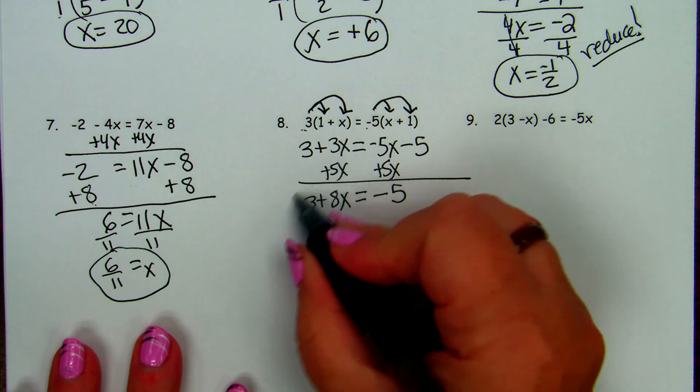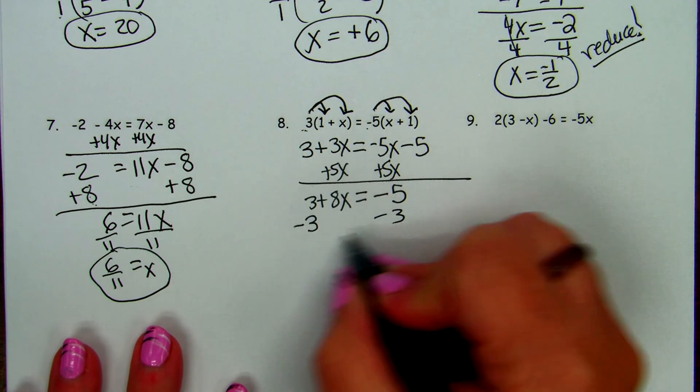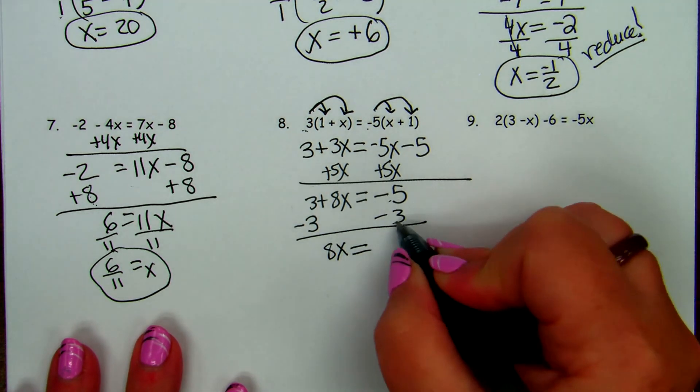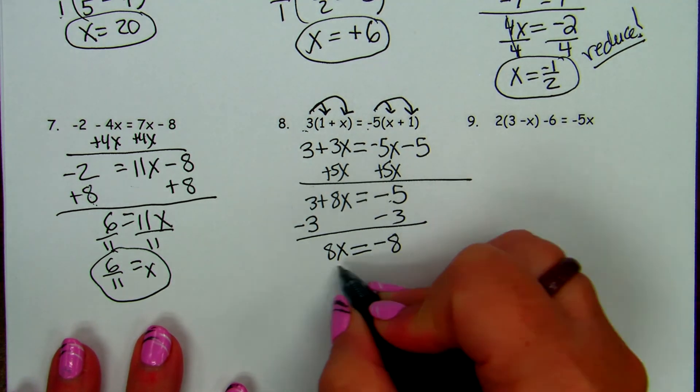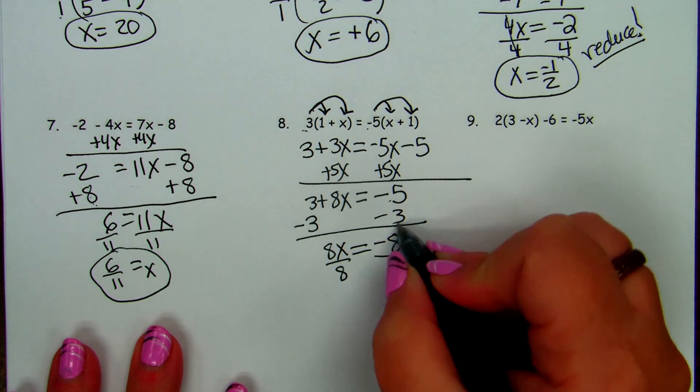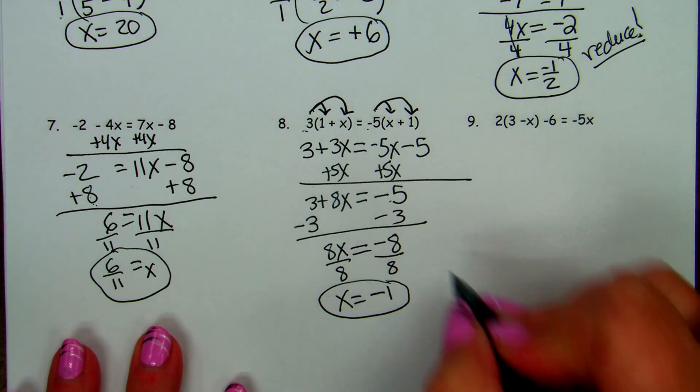How do we get rid of a 3? This is a plus 3, a positive 3. So we're going to subtract 3. Negative 5 plus negative 3 is negative 8. And then we divide by 8, which will cancel. And we get x equals negative 1.